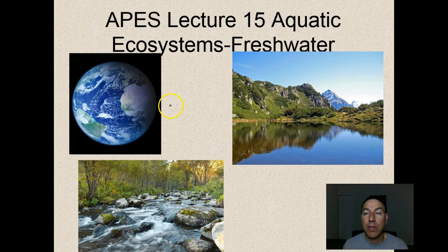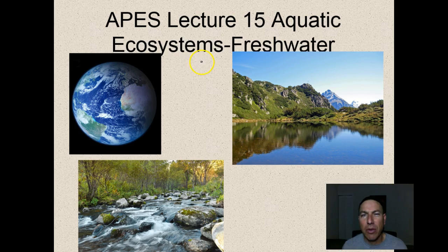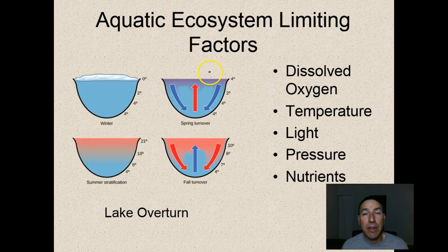This is Mr. Coats and this is AP Environmental Science lecture number 15 on aquatic ecosystems - the freshwater side of things. Aquatic ecosystems are very important to our planet; obviously 75% of the planet is covered with water. We're going to look at the freshwater side of things first and examine why certain plants or animals live in different freshwater areas than others.